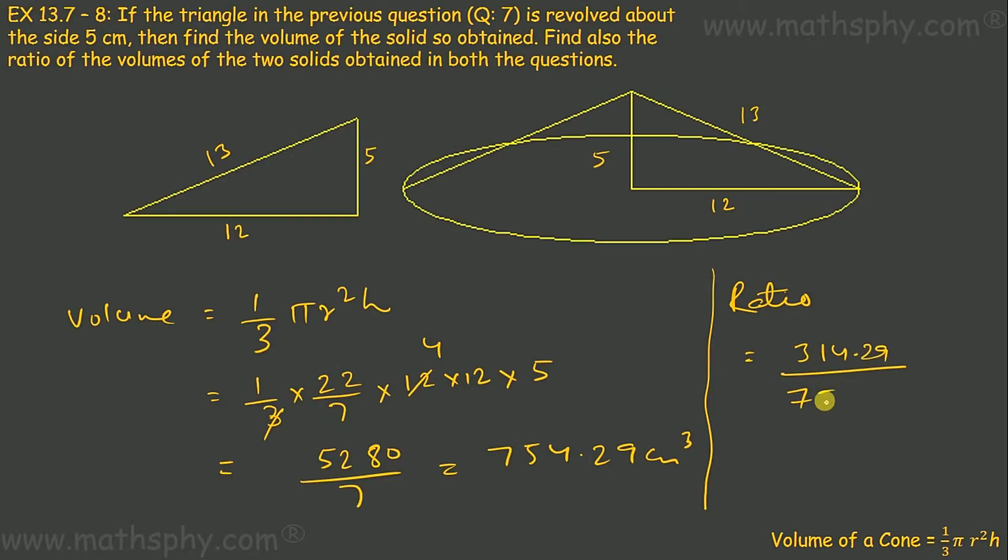I can take 314.29 as 100π approximately and I can take 754.29 as 240π approximately. From this 22/7 if I keep this as 5 × 5, and 4 × 12 × 5 gives me 240. So in place of 754.29 if I write 240π, this is approximately same.